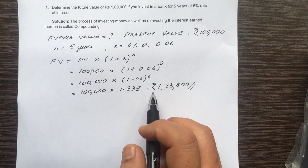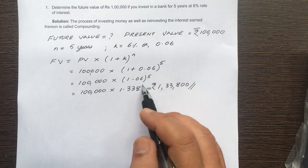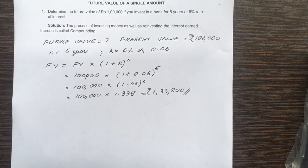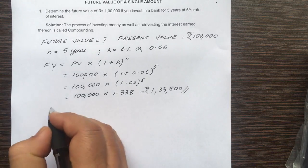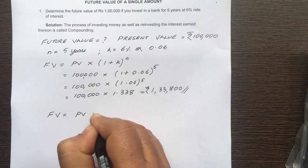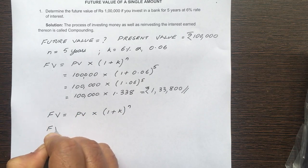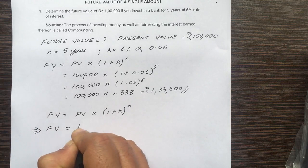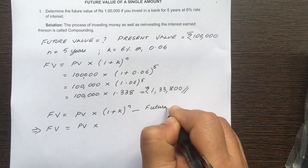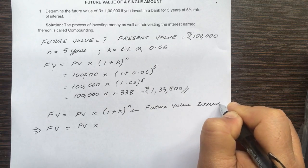But what if it is 15 years? What if it is 30 years or 40 years? Then calculation becomes tedious and cumbersome. So I am going to show you another way of finding out the future value of this same problem. All you have to do is write: future value is equal to present value into 1 plus k to the power n — and this portion is known as the future value interest factor.